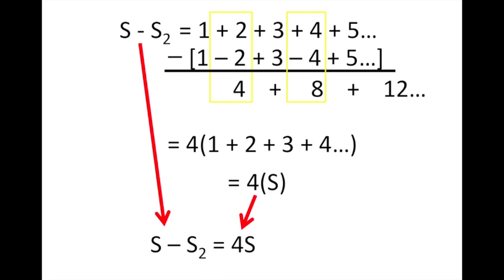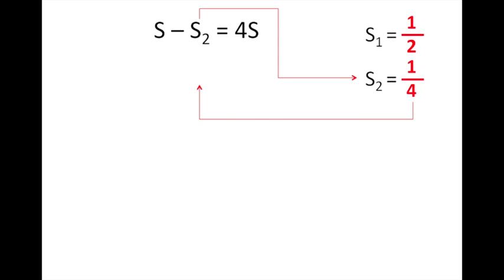On the right side of the screen you see our two equations that we had previously found, and S minus S2 gives us 4S—that's the equation that we recently found. Let's substitute one quarter for S2, so S minus a quarter equals 4S.